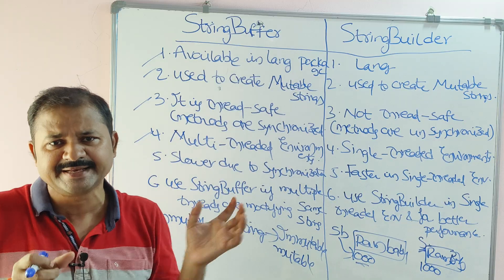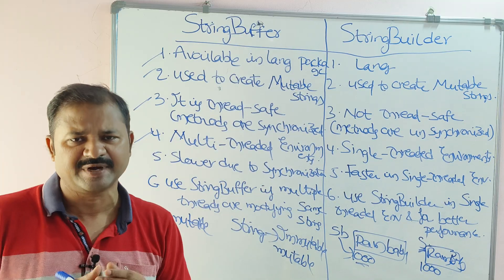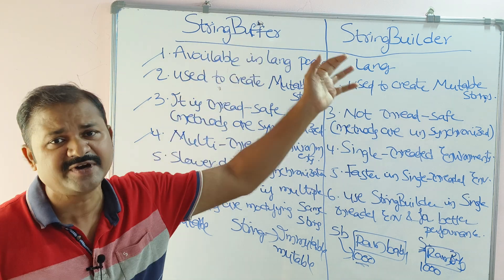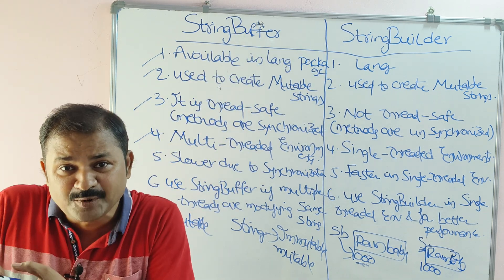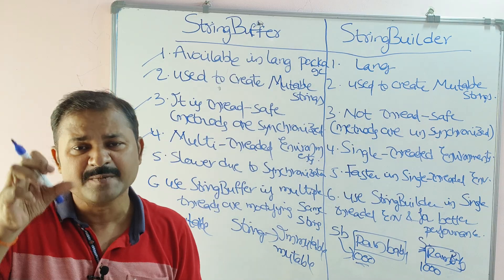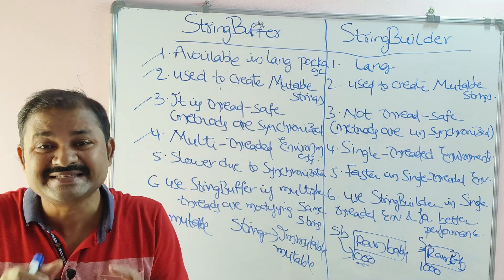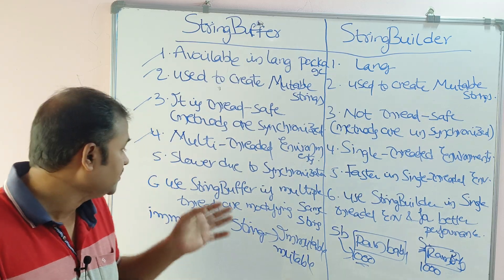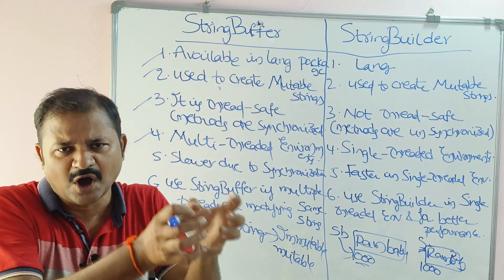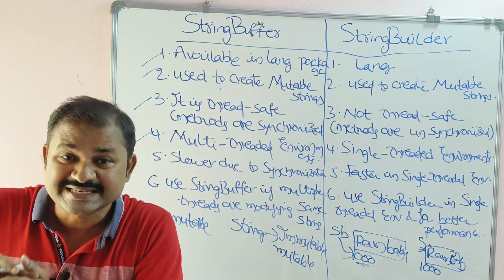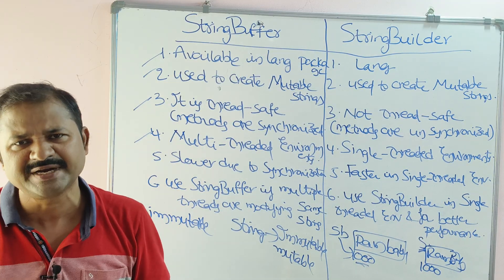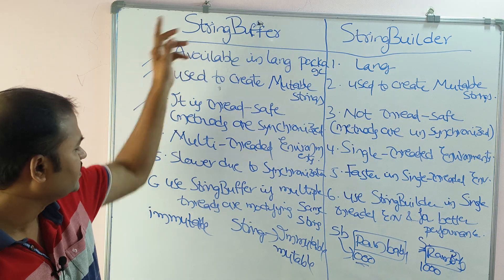Fourth point: StringBuffer class objects are used in a multi-threaded environment. Multiple threads can access the StringBuffer object, but if they access it simultaneously it may produce wrong or inconsistent results. That is why thread-by-thread execution is followed — first one thread accesses the StringBuffer object, completes its task, and then the second thread accesses it.